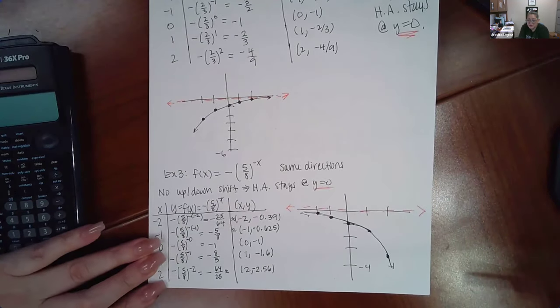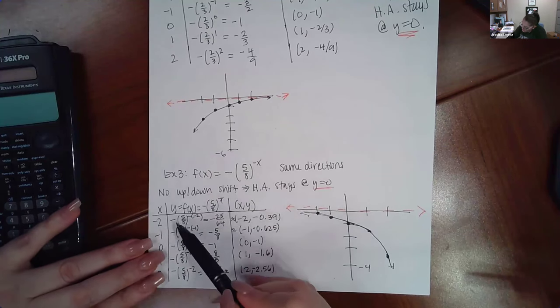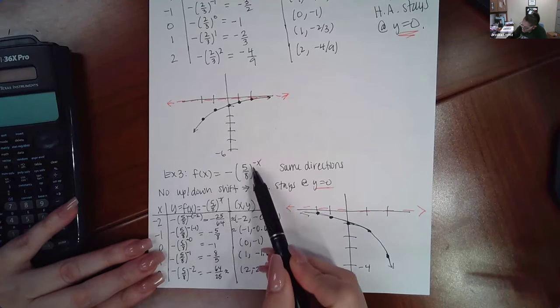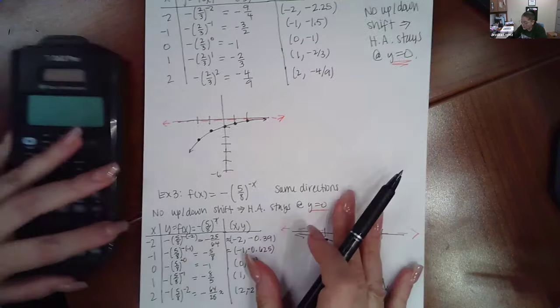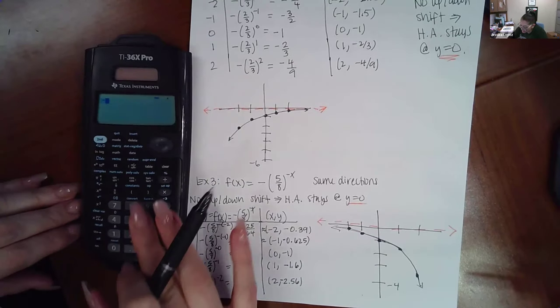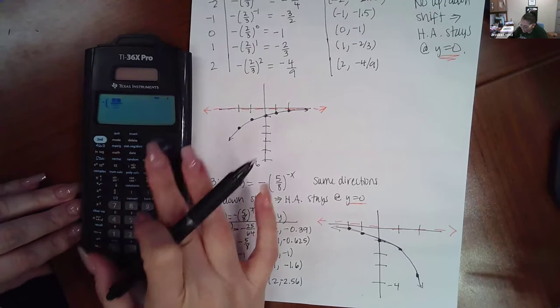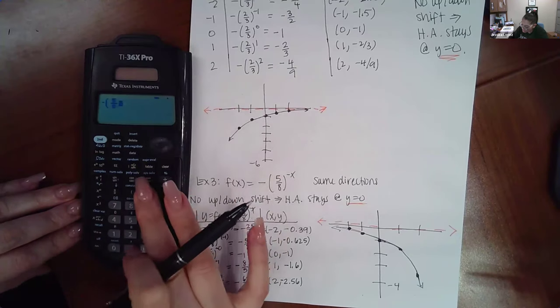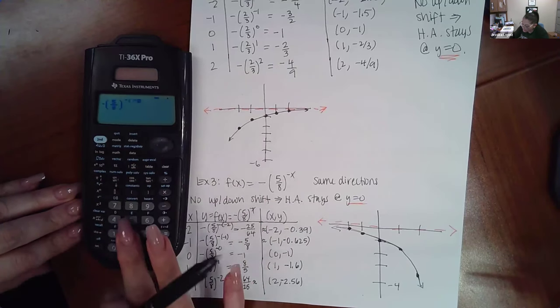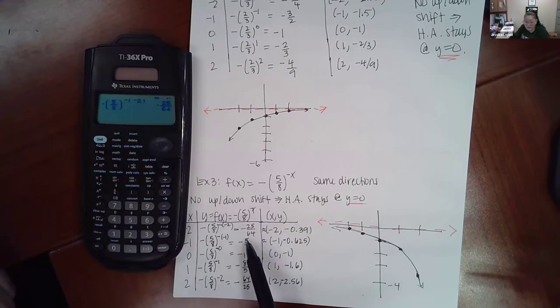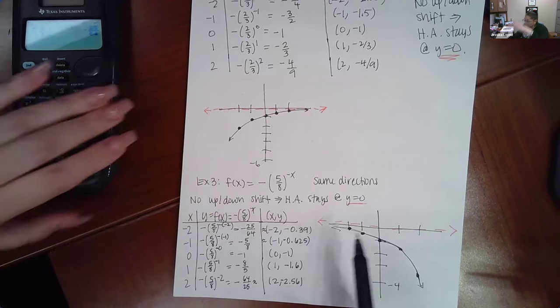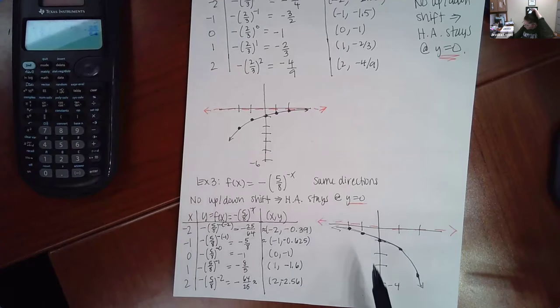Similarly, for this problem here, you've got a negative in both locations, so you've got to be very, very careful. You have a negative in the front, the five eighths, this negative, and then you're plugging in a negative two. So I typed this whole thing in the calculator. I typed in negative parentheses, fraction five over eight, close the parentheses, raise it to a negative, and I'm going to plug in negative two. And when you do that, it did give me negative 25 over 64. Now, I like to change them to decimals just so that I can have an idea of where they are on the graph.